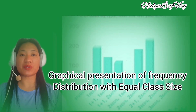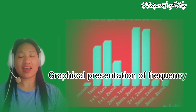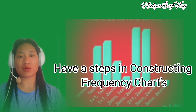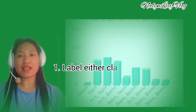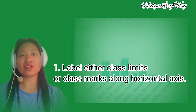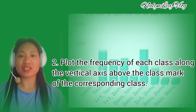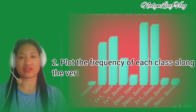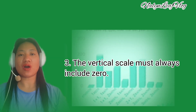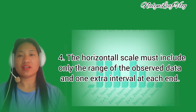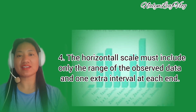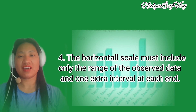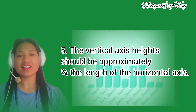In a graphical presentation of frequency distributions with equal class size, there are steps in constructing frequency charts. Step one: label either class limits or class marks along the horizontal axis. Step two: plot the frequency of each class along the vertical axis above the class mark of the corresponding class. Step three: the vertical scale must always include zero. Step four: the horizontal scale must include only the range of the observed data and one extra interval at each end.